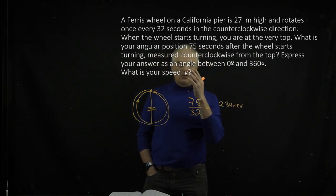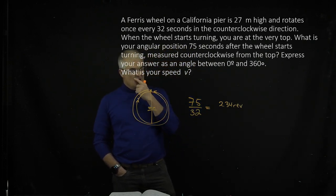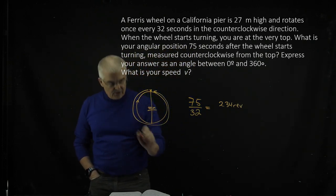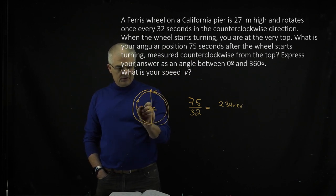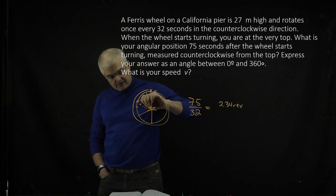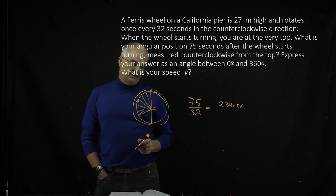But the question is, what is your angular position? So you go around twice, and you go around a second time, and then you're going to go 0.34, so this is 0.25, so your arc length is going to be something like that if I were to sketch it.